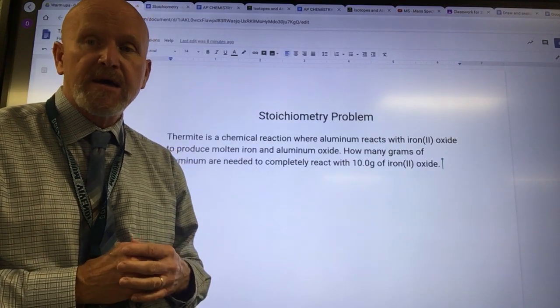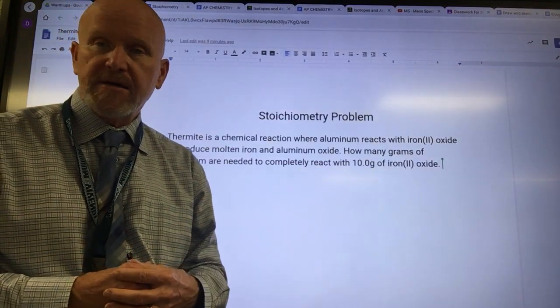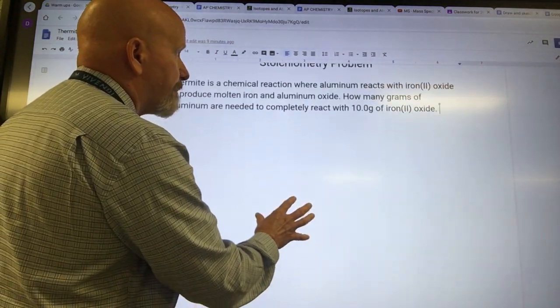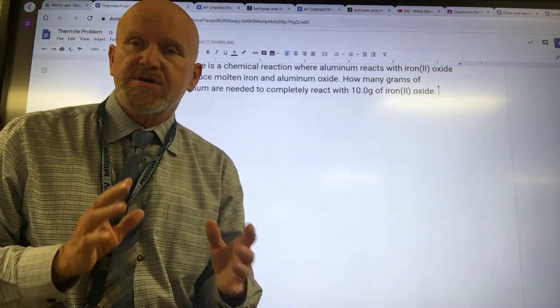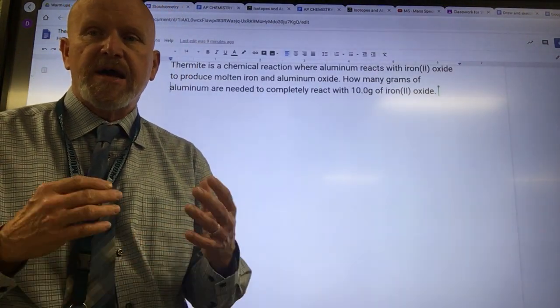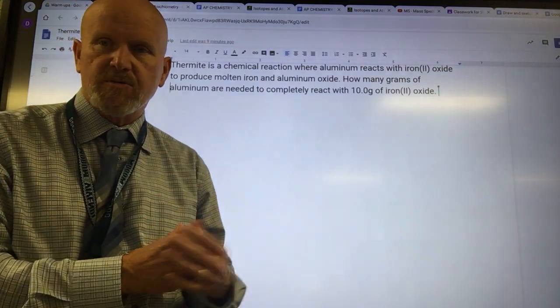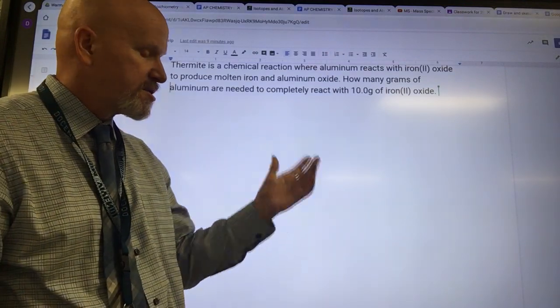When you get a balanced chemical equation, you can ask about a relationship between any two things in that balanced equation. It can be reactant and product, you have product, asked about how much reactant is necessary to get the product, or if you've got a certain amount of one product, how much of the other product do you need. Your first step on any stoichiometry problem is you have to have a proper balanced chemical equation.